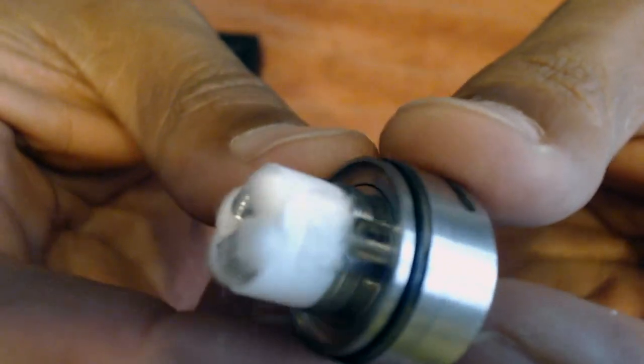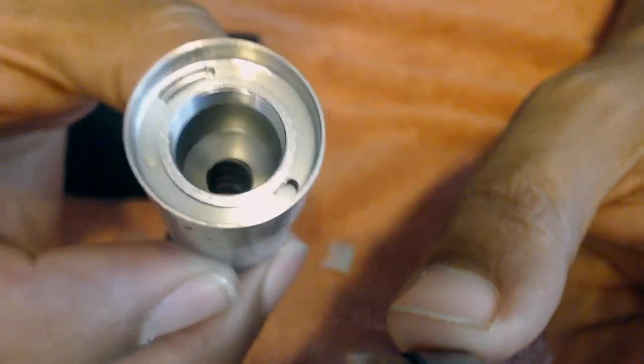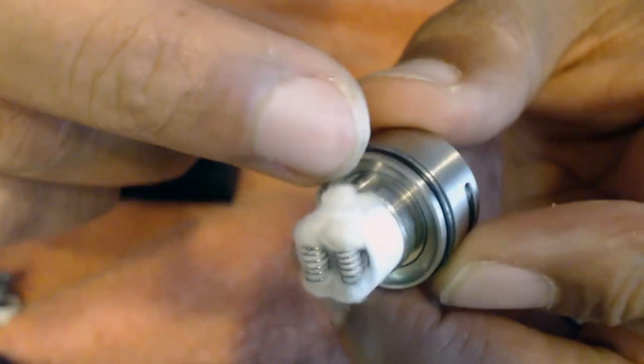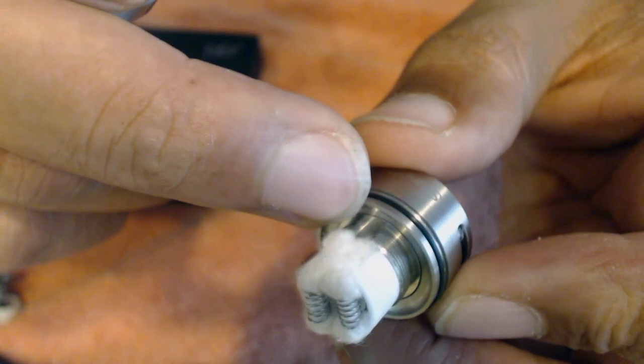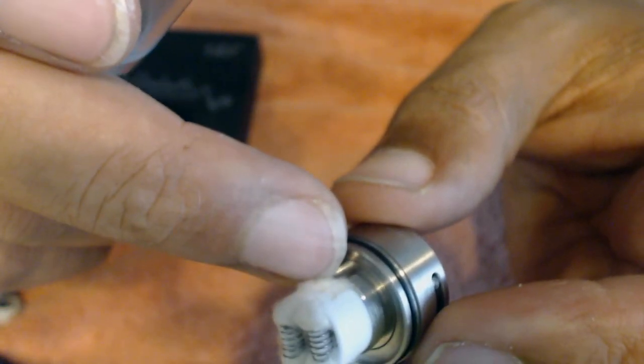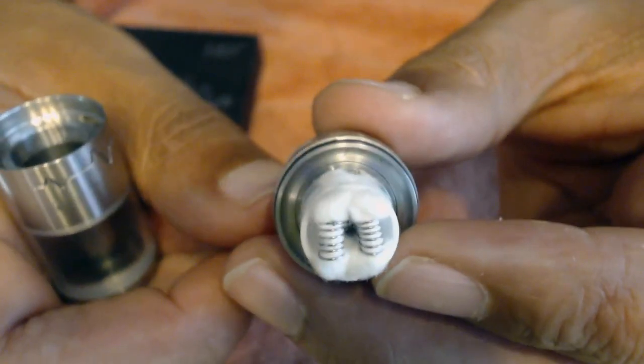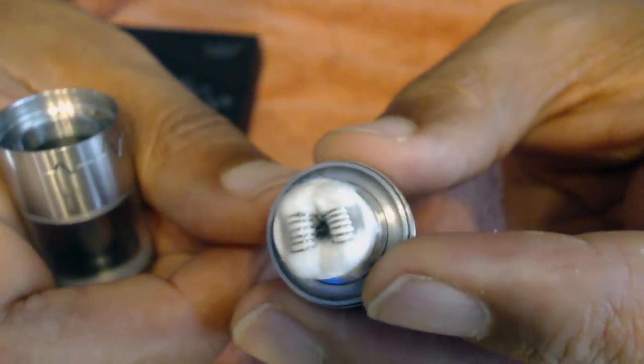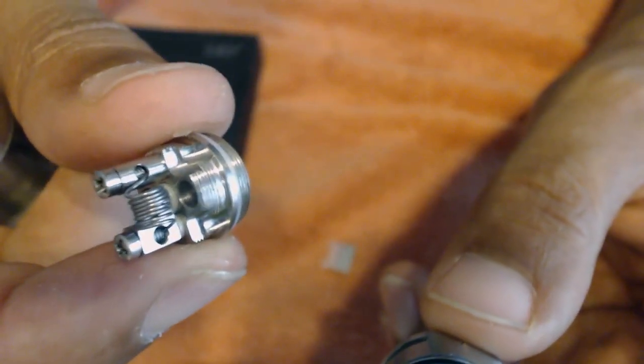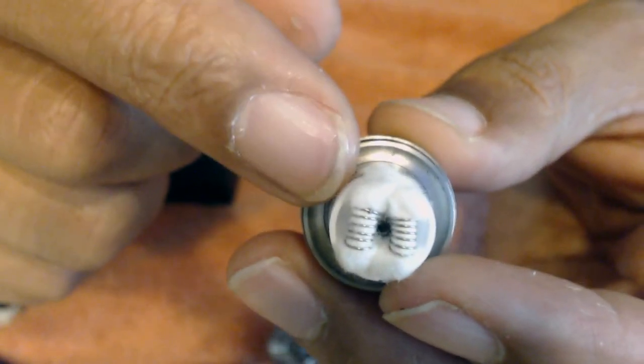There's your airflow. Kind of reminds you of the Zephyrus. And your pre-made coil spins in like so. Now let me say this too. When you spin this on, these juice channels always land right here, always right there where your cotton is. I sit there and twist it on, twist it off to see where it would land. It always lands in front of this channel, which is a good thing. So that's why I probably have no issues with dry hits. None whatsoever. It wicks just fine.